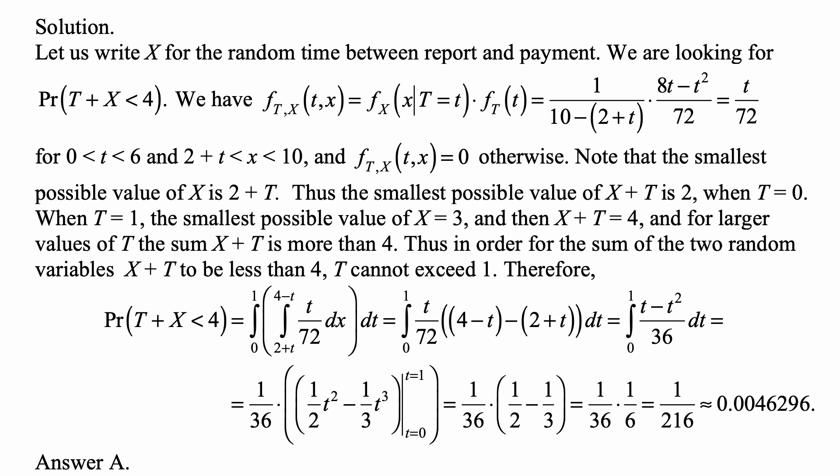the probability of T+X being less than 4 is the double integral of the joint density over the region where T+X < 4 happens. Well, that's the region where t runs from 0 to 1.